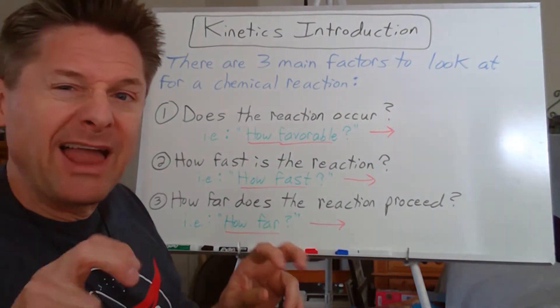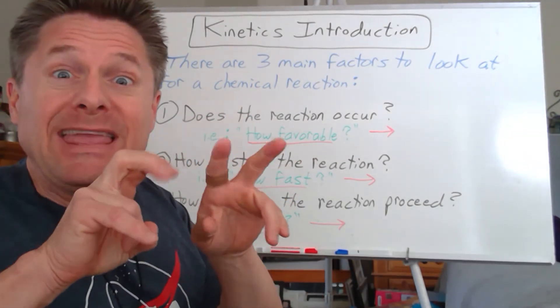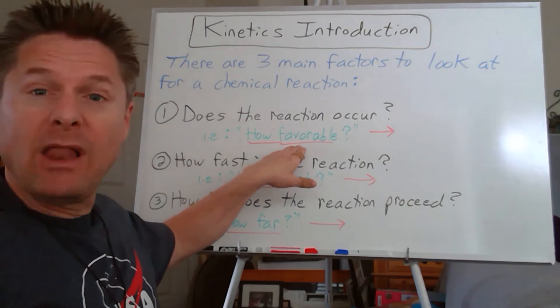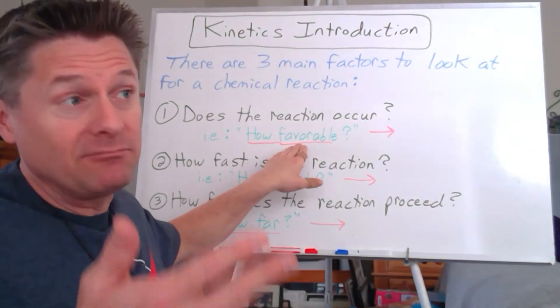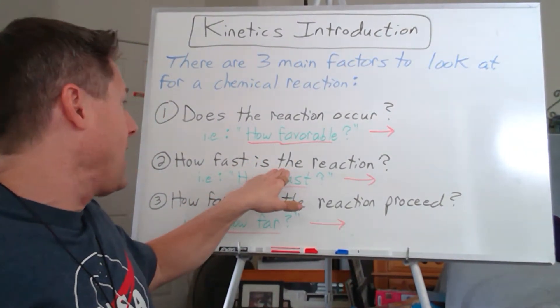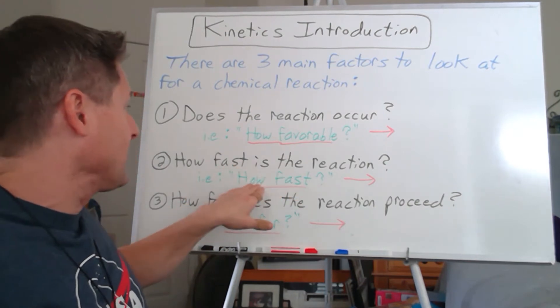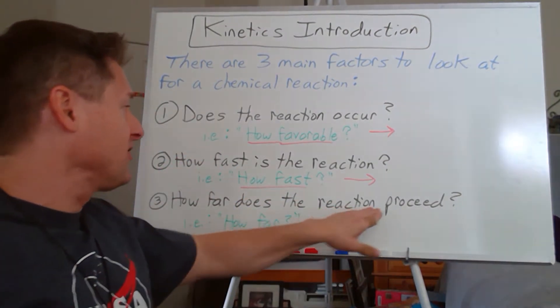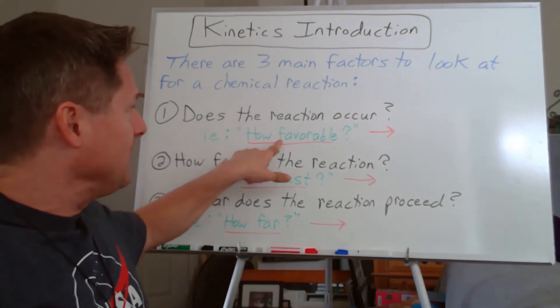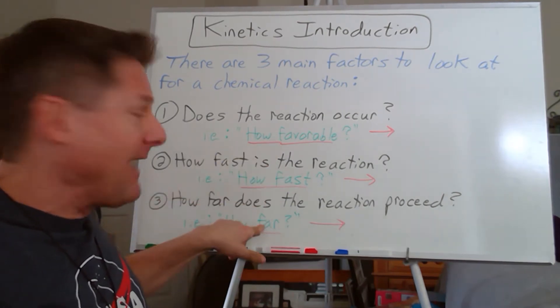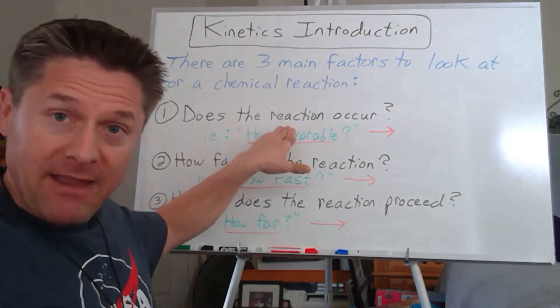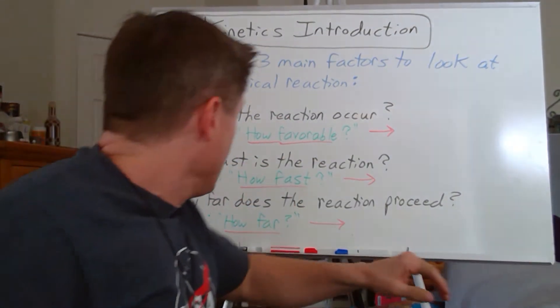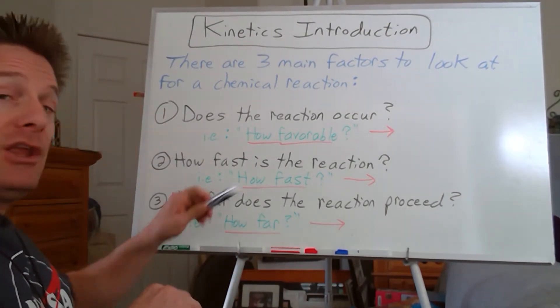The way I like to Mickey-ize these is: instead of 'does the reaction occur,' I'm saying 'how favorable is the reaction.' Instead of 'how fast is it,' just 'how fast.' And 'how far does the reaction proceed'—'how far.' So, the three F's: favorable, fast, and far.